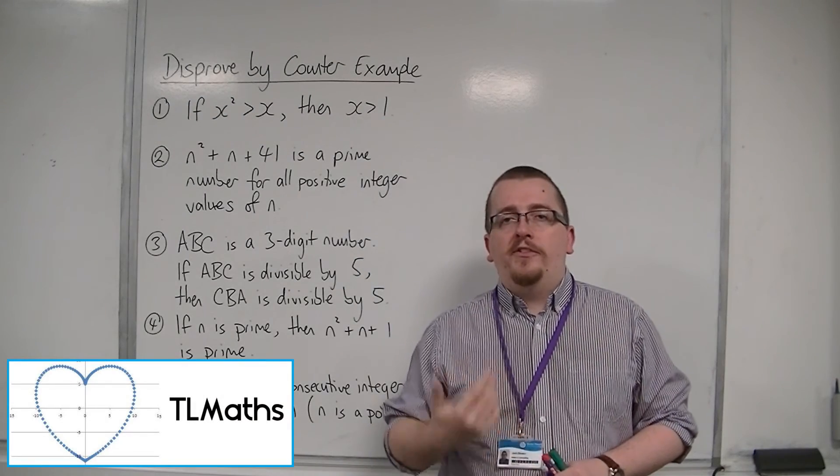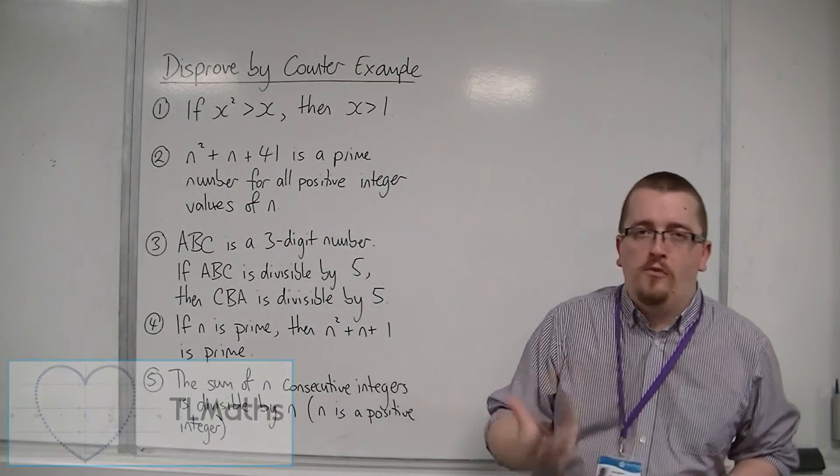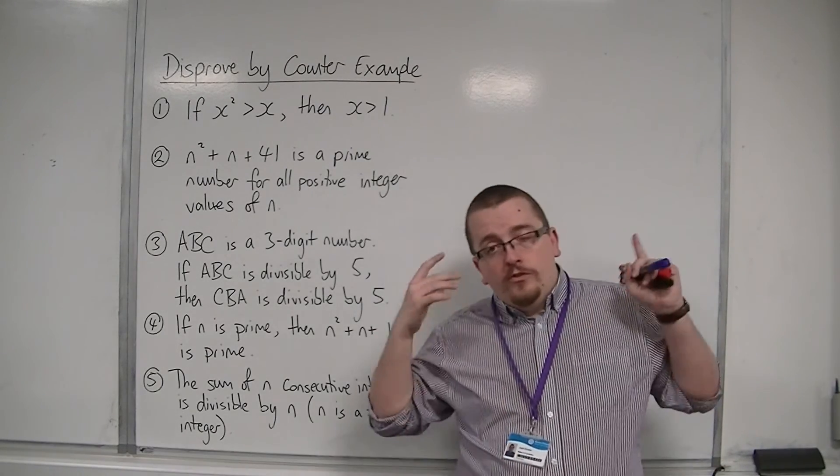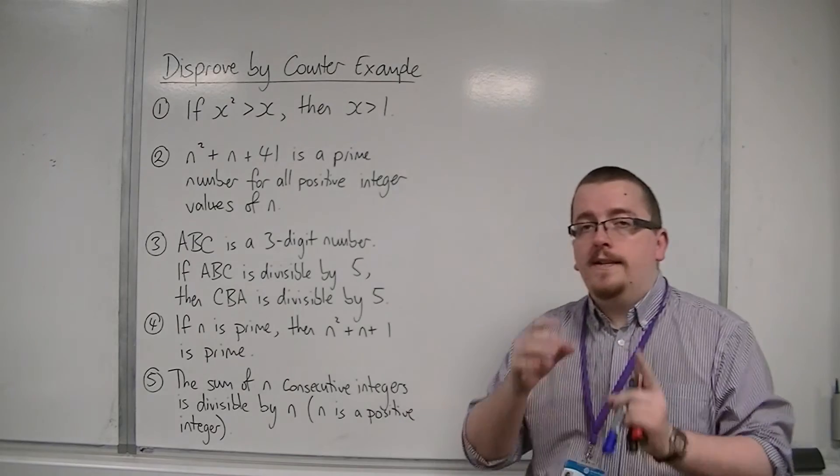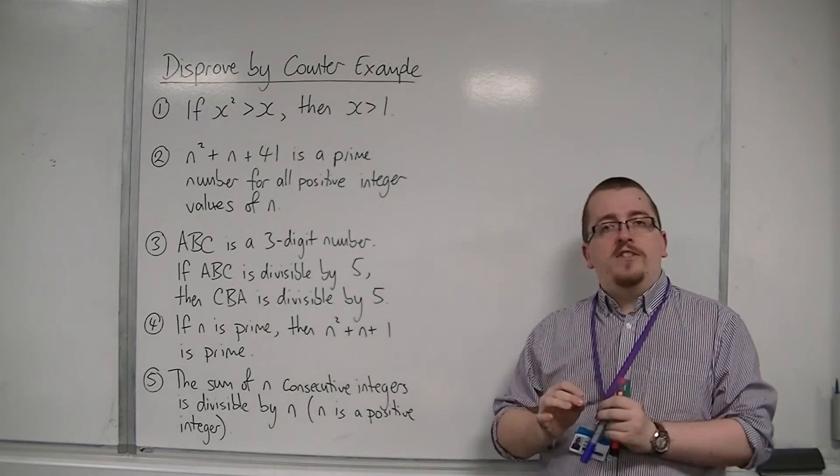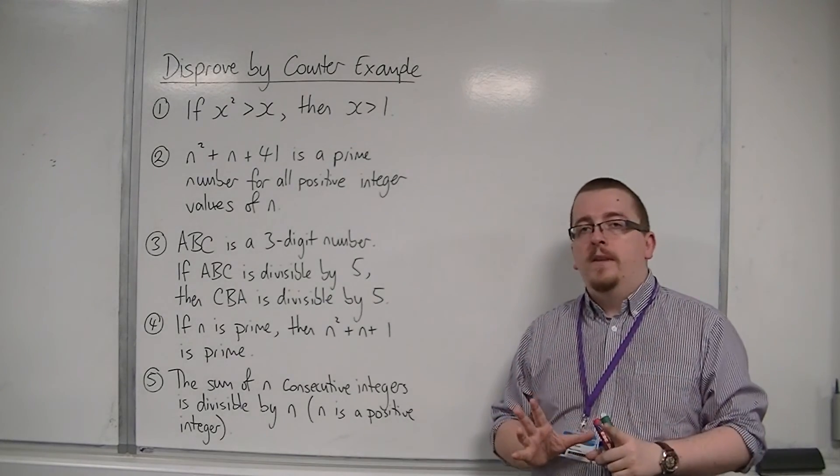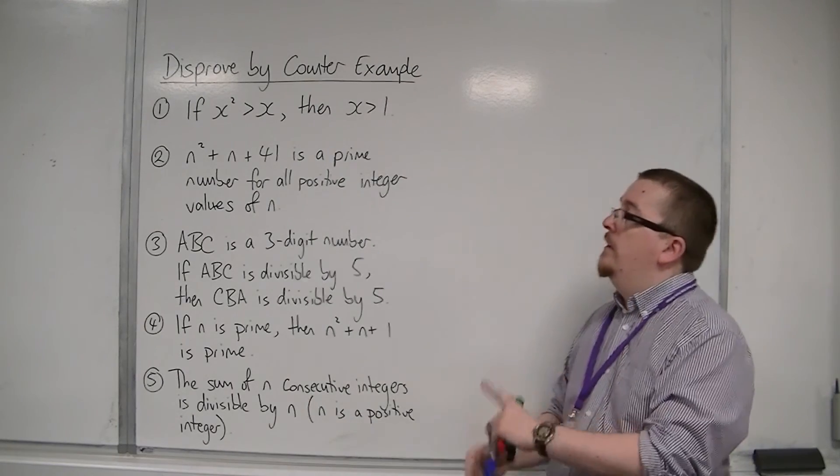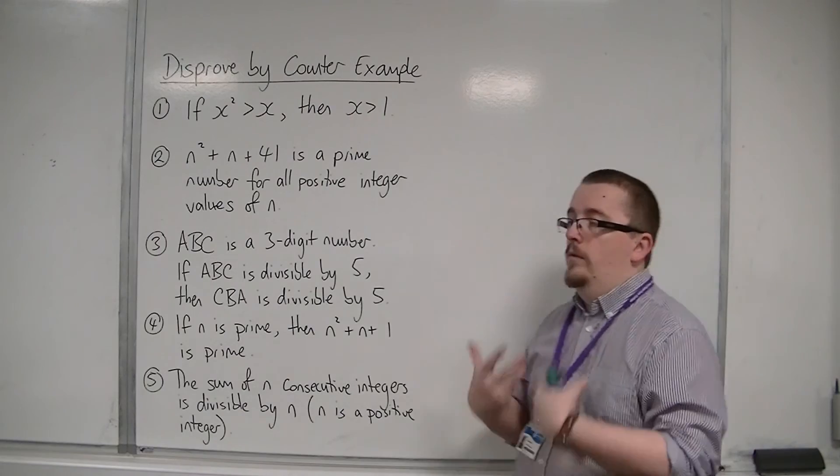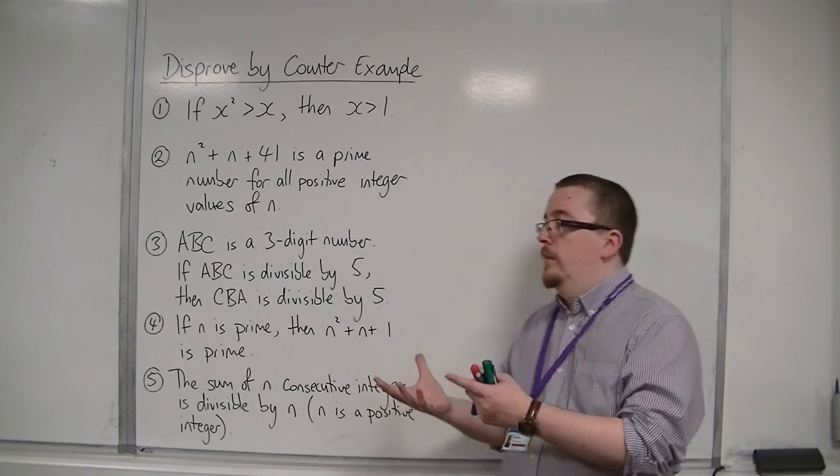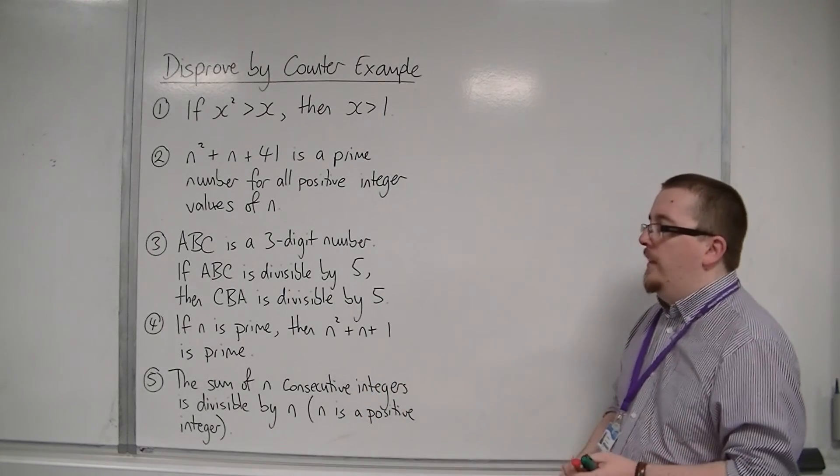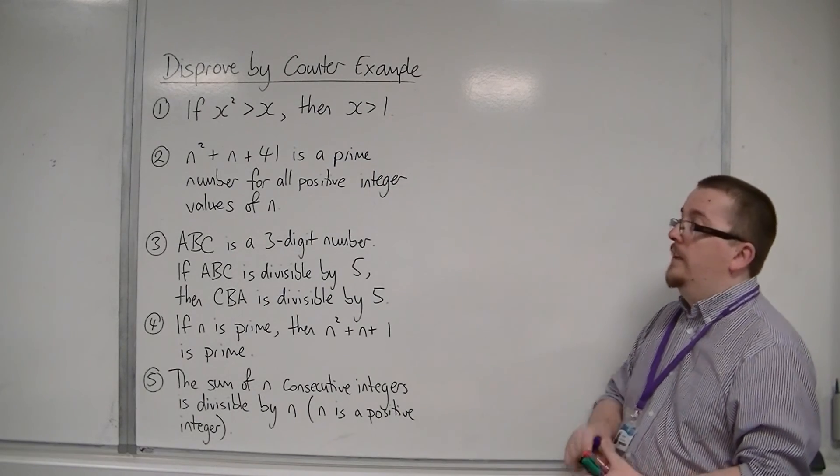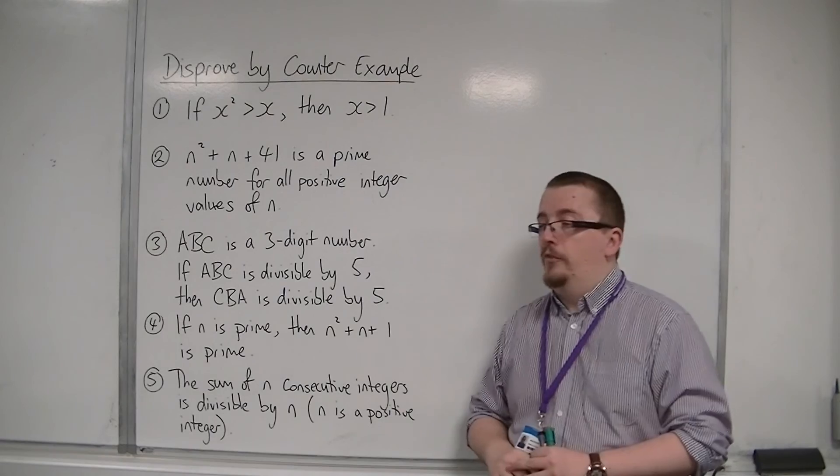Sometimes we will be given a statement and we need to disprove it. The way to disprove a statement is to just find one counter-example, one example where it doesn't work. And that will disprove the statement because the statement will be saying it for all possibilities. So we just need to find one example where it doesn't work and then the whole thing falls down.